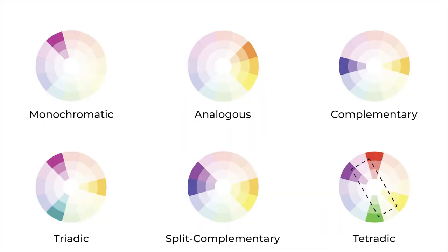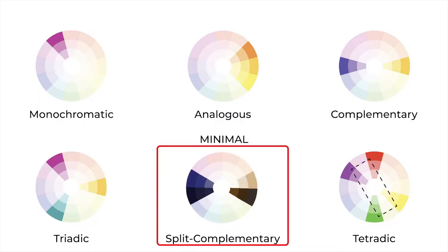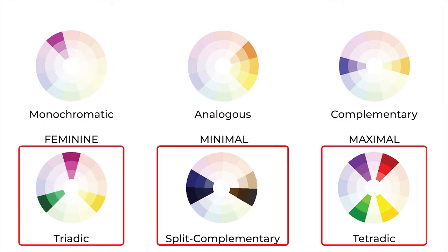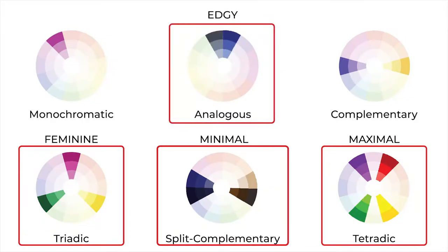Now that you know the six color schemes, I've assigned four color schemes to the four style aesthetics. I'm using the split complementary color scheme for a minimal style aesthetic, the tetradic color scheme for a maximal style aesthetic, and the analogous color scheme for an edgy style aesthetic.